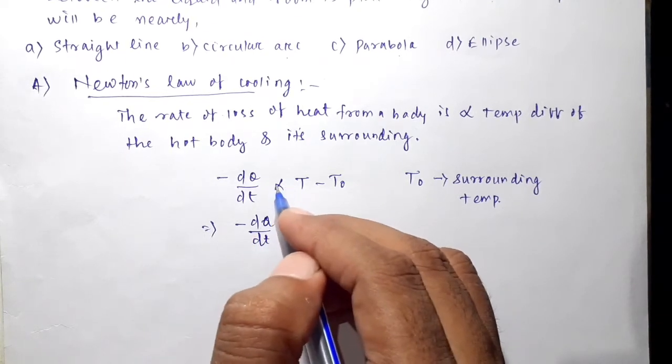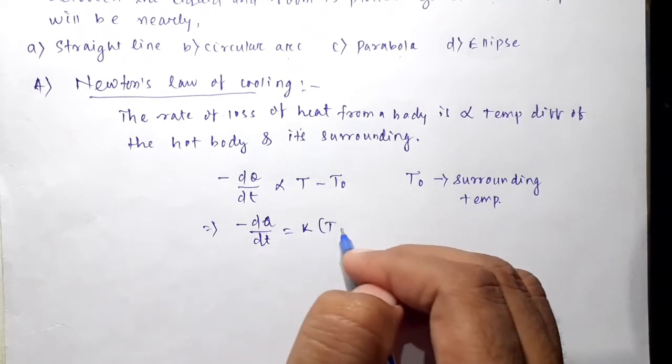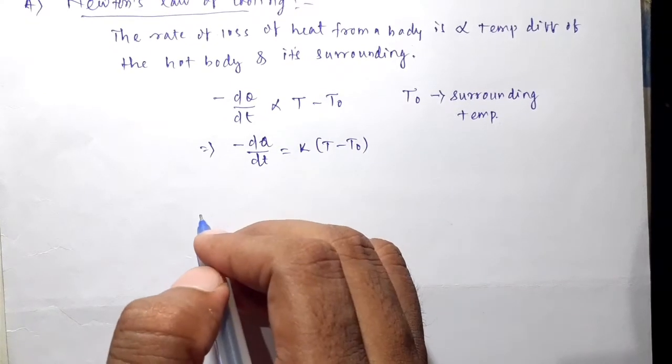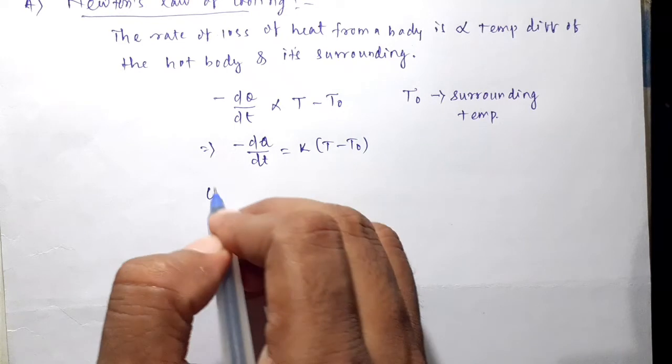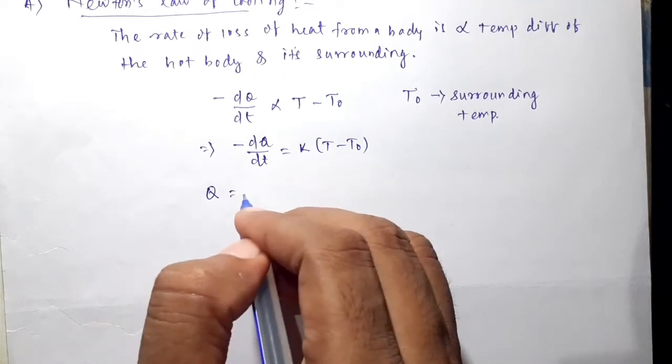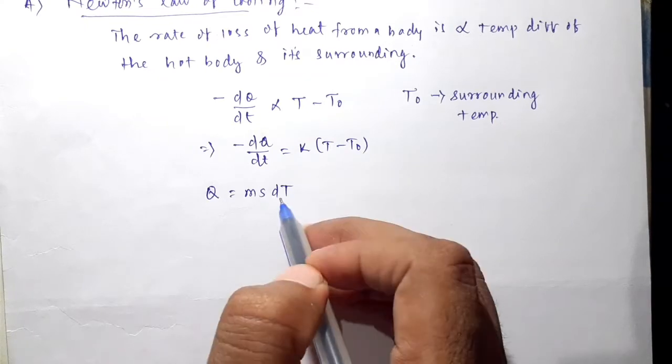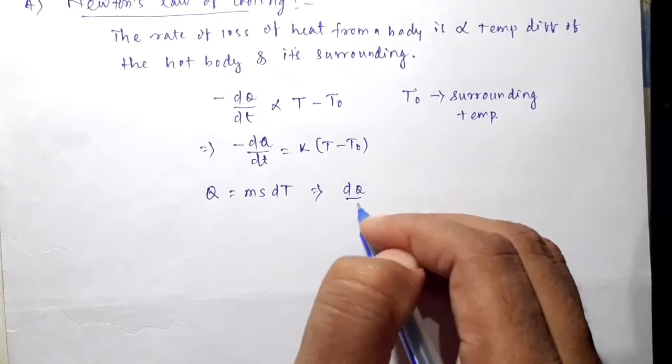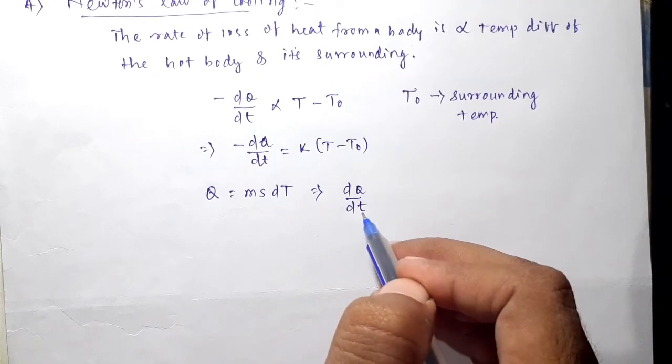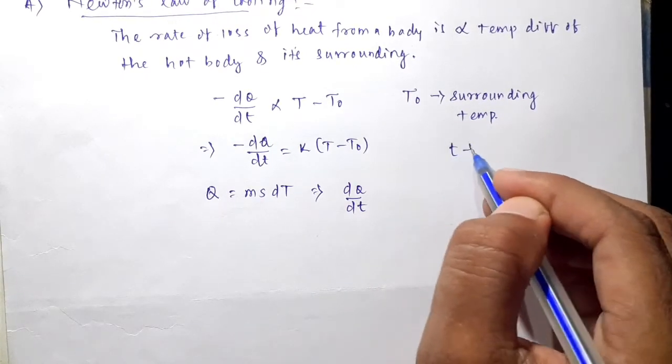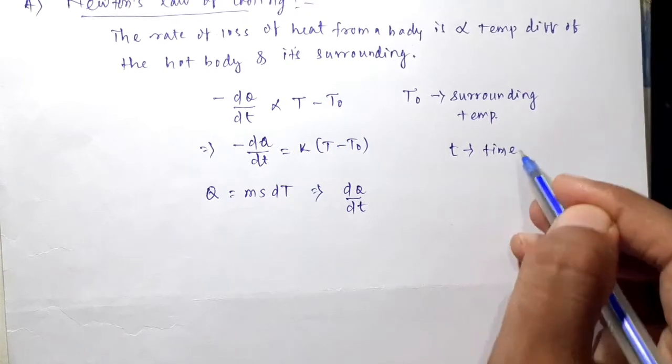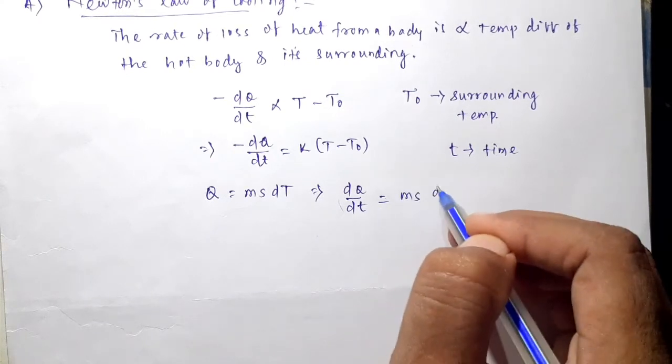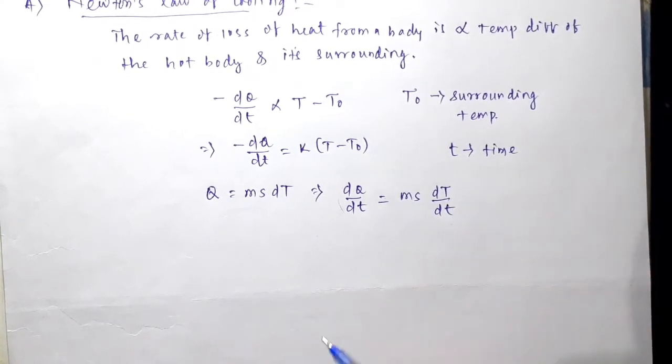Now we can write minus dQ/dt equals k times T minus T0, removing the proportionality with a constant k. One thing to note: capital T is temperature and small t denotes time, because this is rate of change of heat.